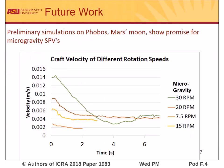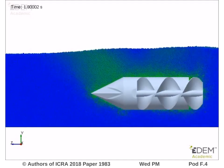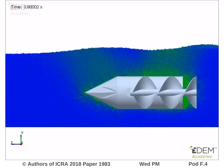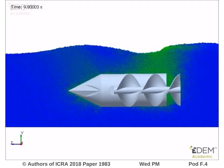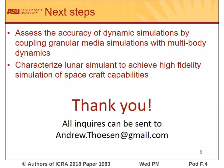Our future work involved using a dynamic simulation to look at how a craft might operate on Phobos, Mars's moon. This was done with the microgravity of Phobos and we were able to achieve a steady state speed of four millimeters per second. The granular media displayed here has the density of the granular media on Phobos with the gravity turned down to the microgravity on Phobos. Our next steps are to assess the accuracy of dynamic simulations by coupling these simulations with multi-body dynamic software and then characterizing a lunar simulant in this software to try to achieve high fidelity simulations of possible spacecraft capabilities.